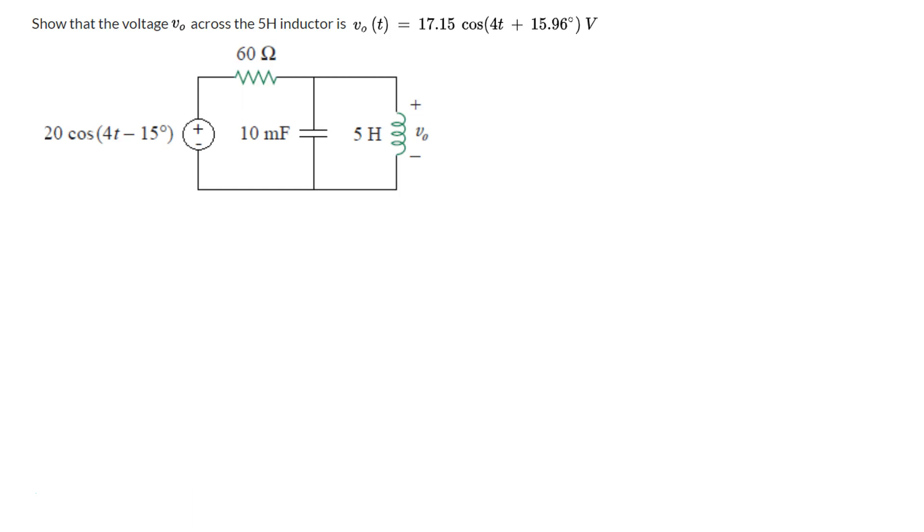This problem can be done multiple ways. We can use nodal analysis, and today we'll try to do this using the concept of voltage dividers. But before we do that, let's convert the cosine terms into their phasor domain.